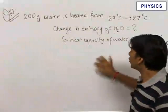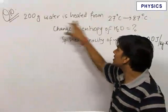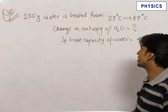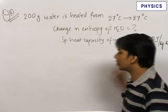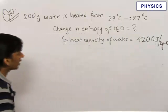Here we have a simple question regarding change in entropy of water. 200 grams of water is heated from 27 degrees Celsius to 87 degrees Celsius. We need to find out the change in entropy of water when the specific heat of water is given to be 4200 joules per kilogram kelvin.